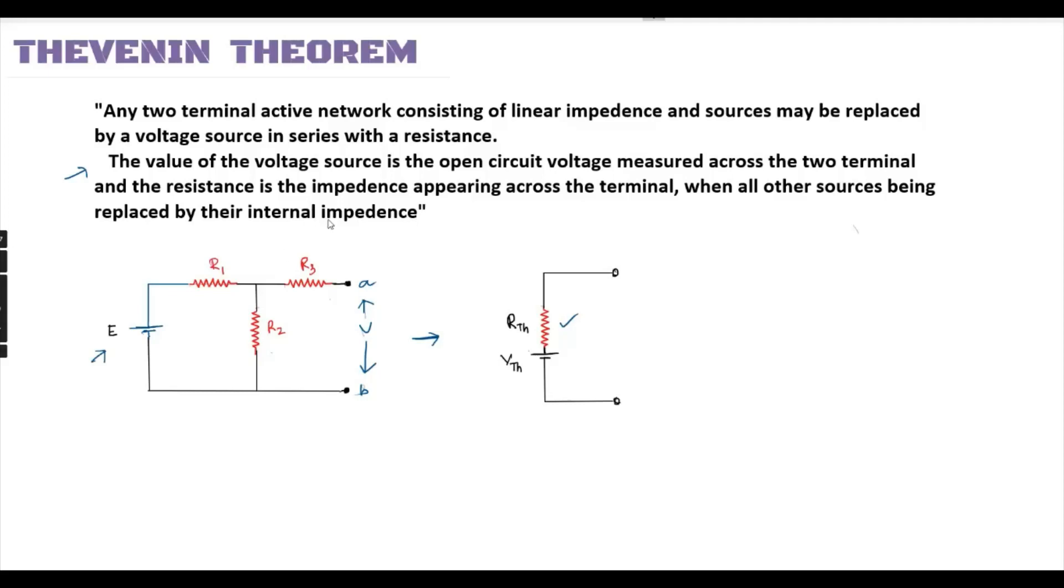The resistance is the impedance appearing across the terminal when all the sources are replaced by their internal impedance. The resistance RTH is calculated across the terminals A and B with respect to circuit resistance.